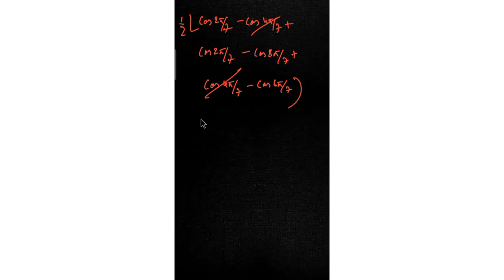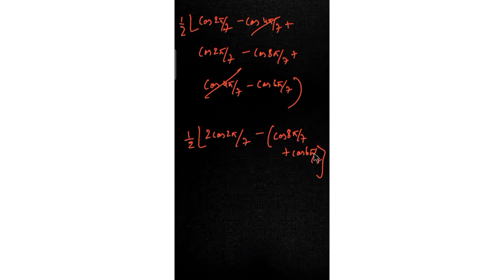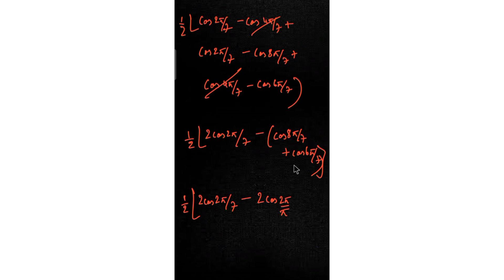The terms −cos(4π/7) and +cos(4π/7) cancel. This leaves ½ · [2cos(2π/7) − cos(8π/7) − cos(6π/7)]. Taking minus common from the last two terms and applying the identity cos(C) + cos(D) = 2cos((C+D)/2)cos((C−D)/2): (8π/7 + 6π/7)/2 = 14π/(7·2) = π.